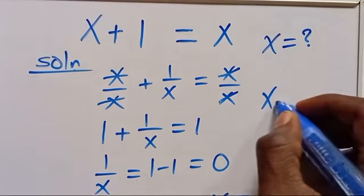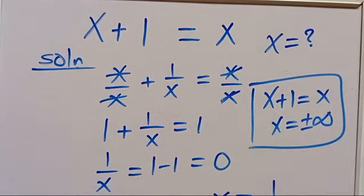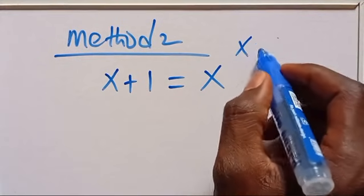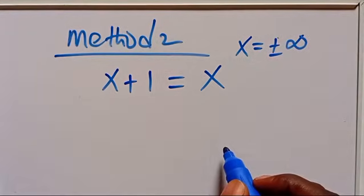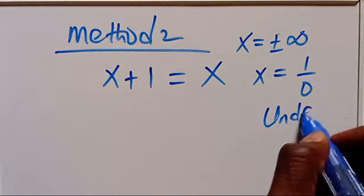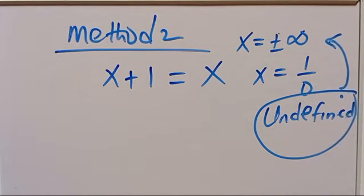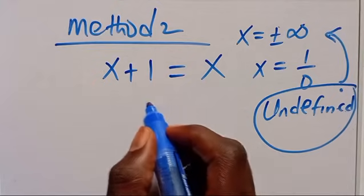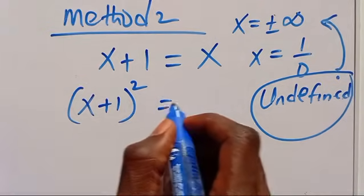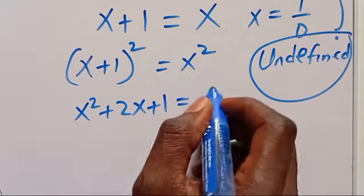Just to prove that when we have x plus 1 equals x, the value of x equals positive or negative infinity. Suppose we have x plus 1 equals x. To avoid the negativity, we square both sides: x plus 1 in parentheses squared equals x squared. The expansion gives us x squared plus 2x plus 1 equals x squared.